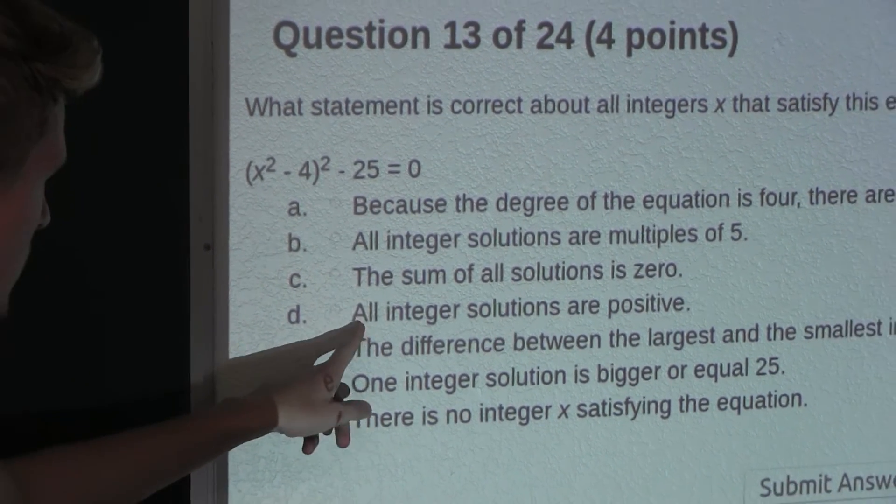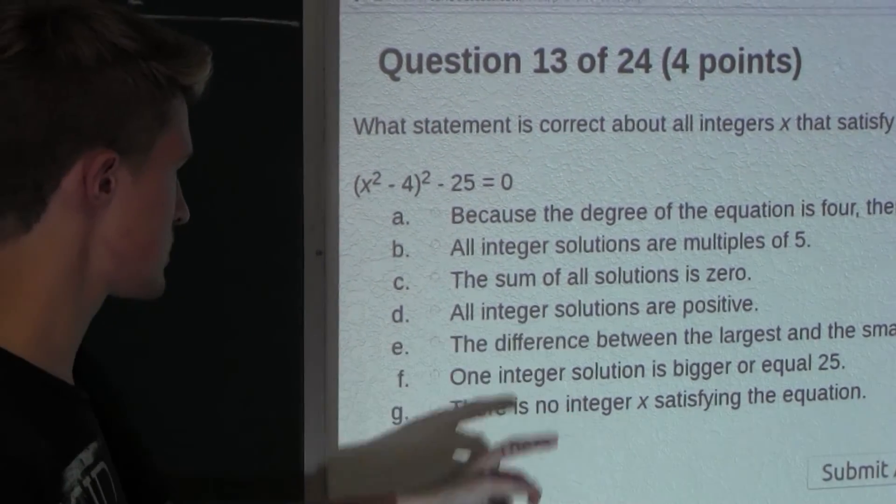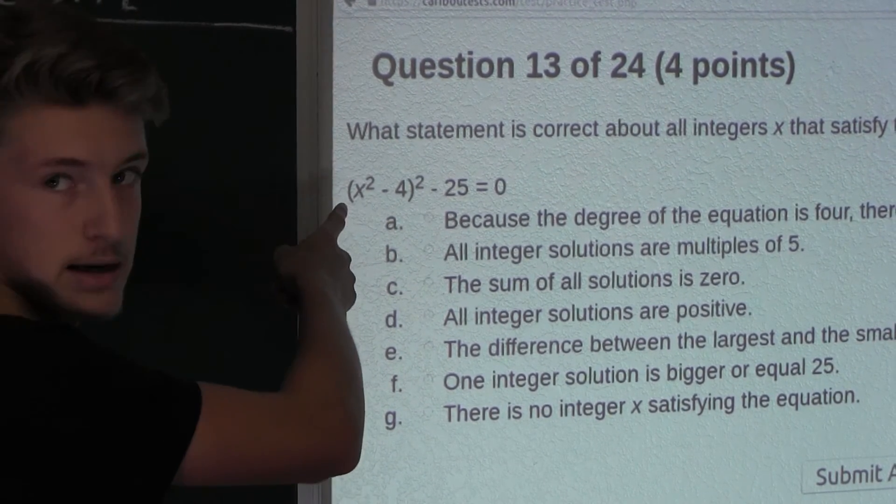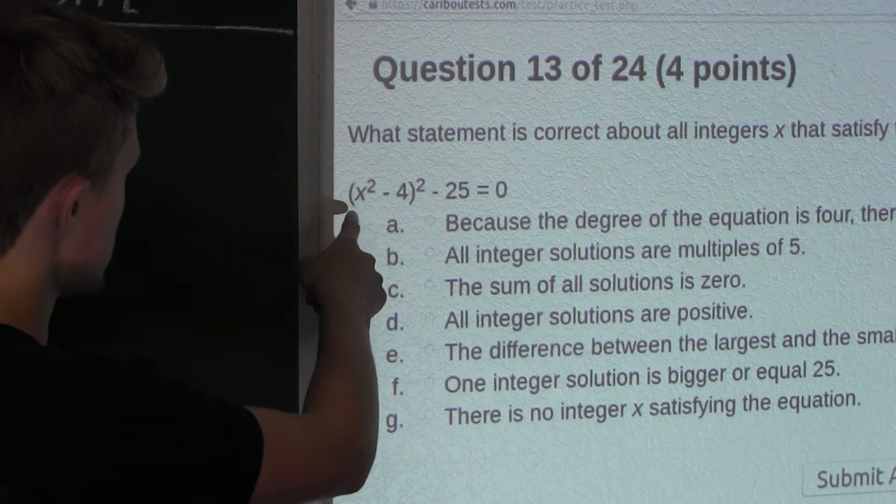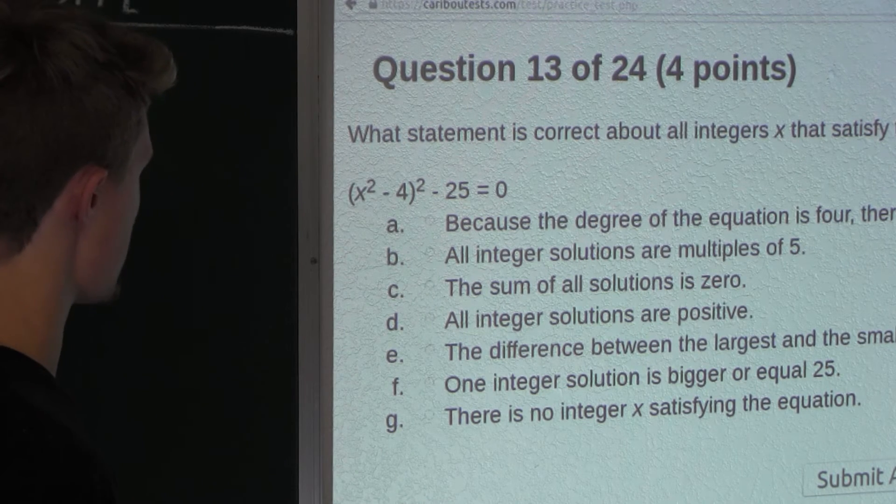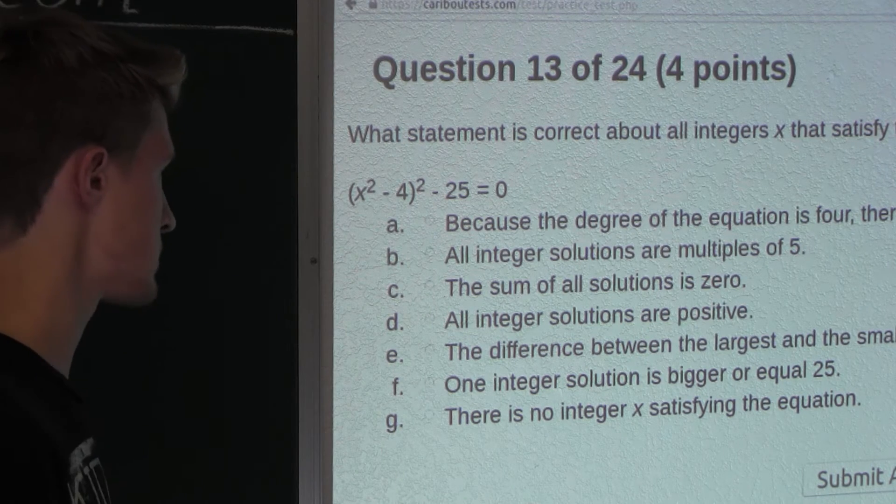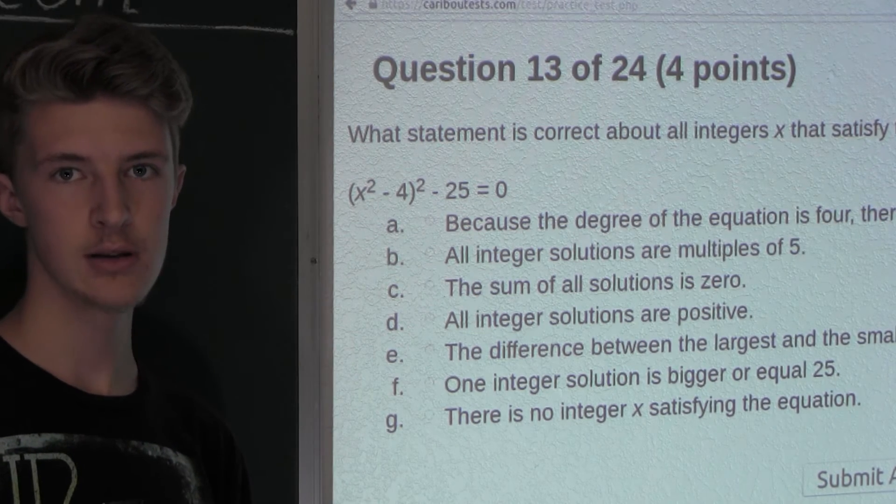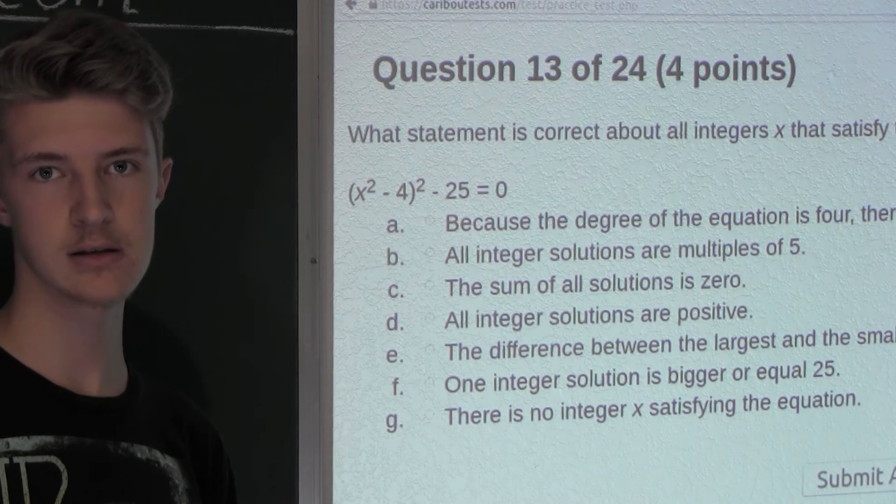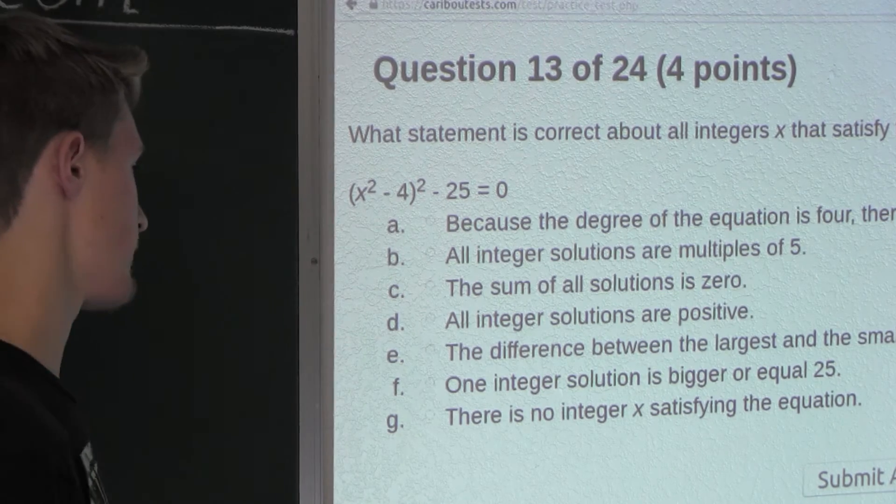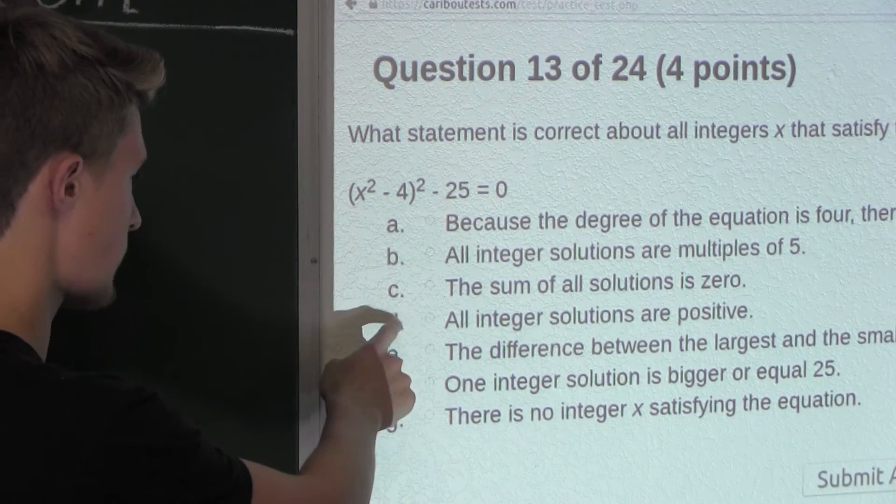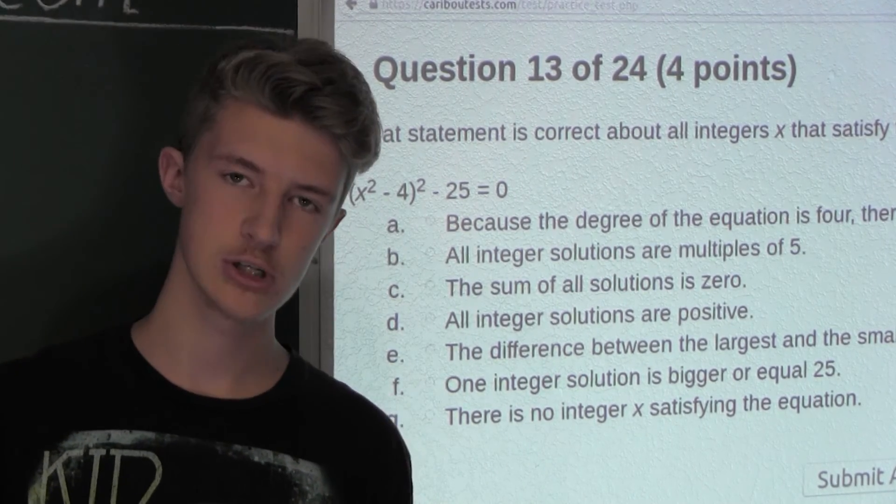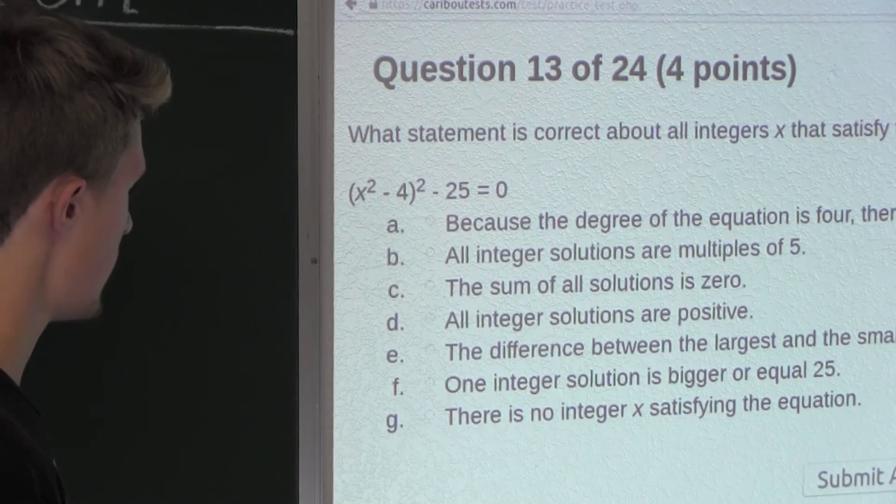Now option D: All integer solutions are positive. Well, again, like we explained before, here the powers of x are all even. So if there is a positive x solution, then there must be a negative of that solution for x. So therefore, this is false. And also, we know that a solution is negative 3, which is negative.